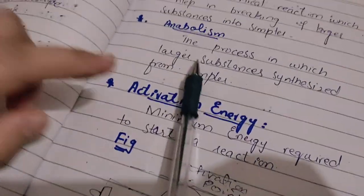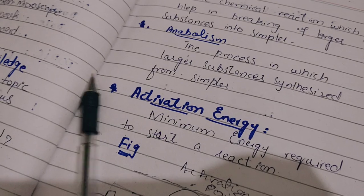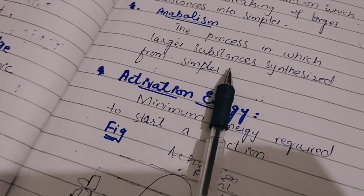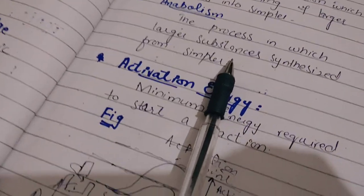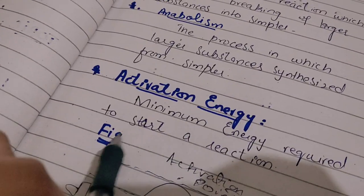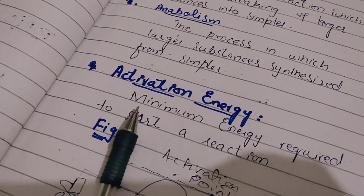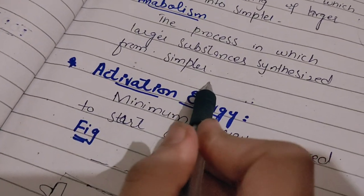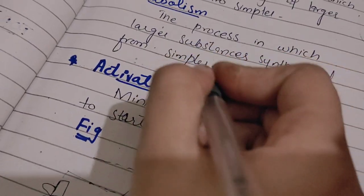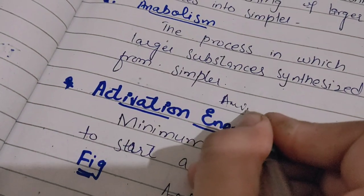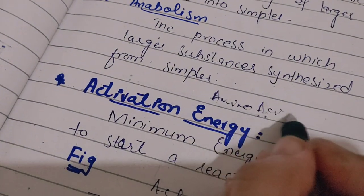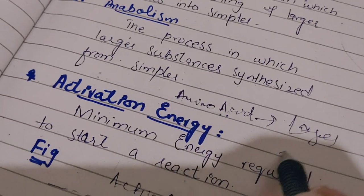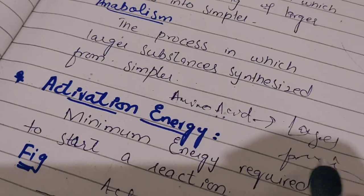The two types — catabolism and anabolism — are very necessary. Without these processes, the substrate cannot be broken down into products. As an example of anabolism: amino acids combine to form larger proteins.